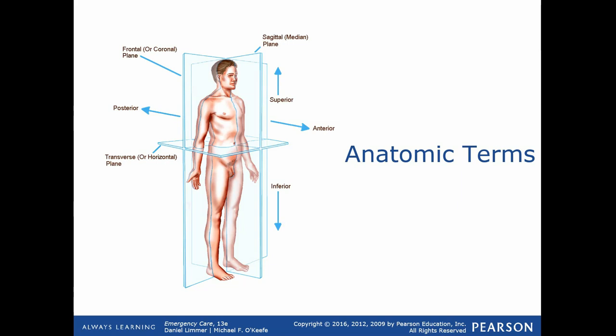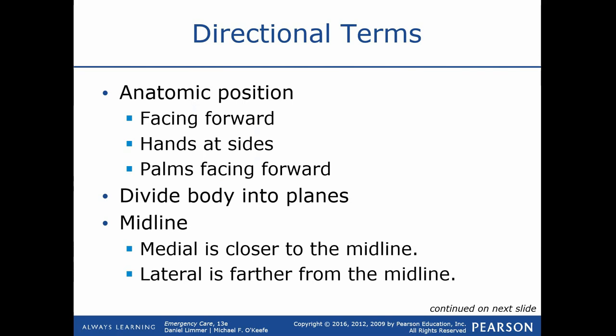Superior and inferior also come up frequently. The superior and inferior vena cavas are the main veins returning blood to the heart, draining into the right atrium. The vena cava from below the heart is the inferior vena cava; the one from above is the superior vena cava. Superior and inferior are associated words — they're relative to the item or object you're referring to.